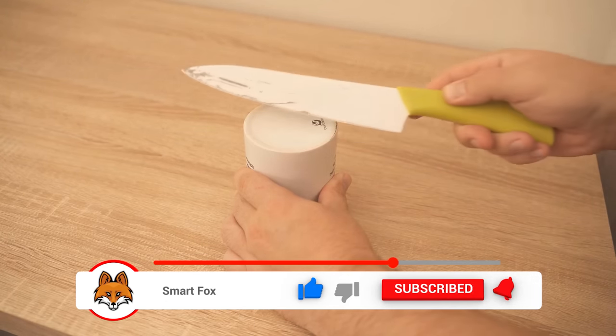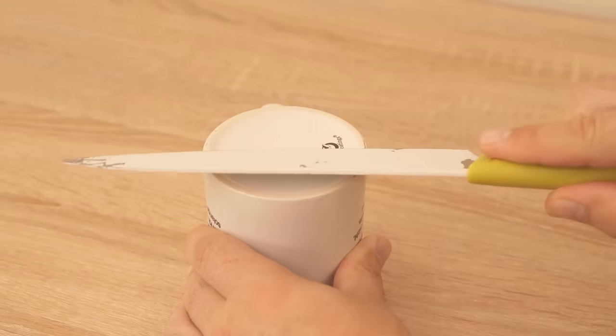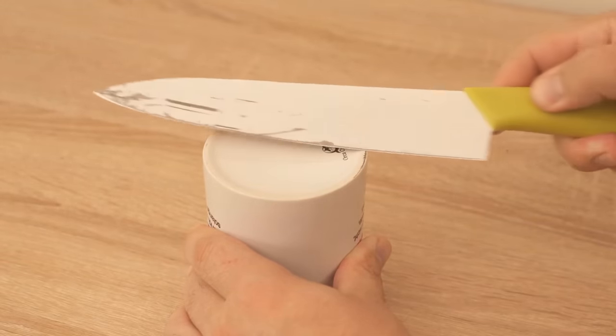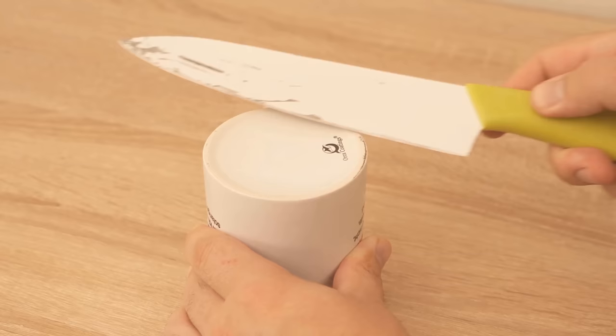So if your knife is a bit blunt and you don't have a sharpening stone or knife sharpener at home, you can use such a cup as long as it's made of ceramic.